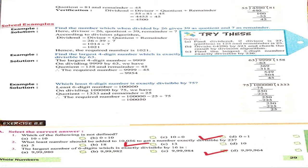Now start our exercise 2.E. Question A, select the correct answer. First part: which of the following is not defined? From the four options given, option C is correct: 10 divided by 0 is not defined.